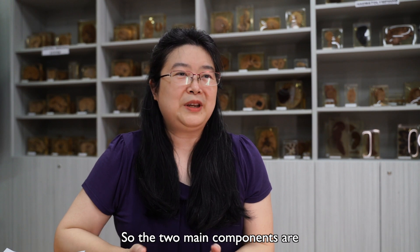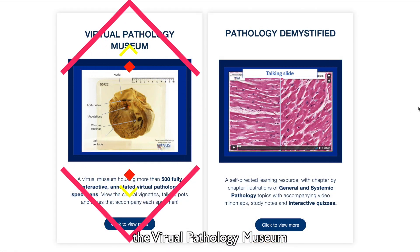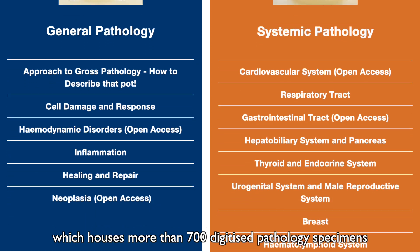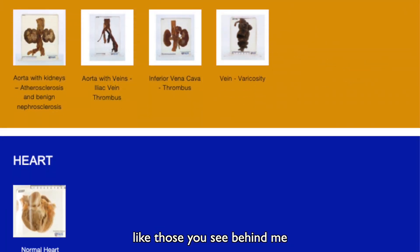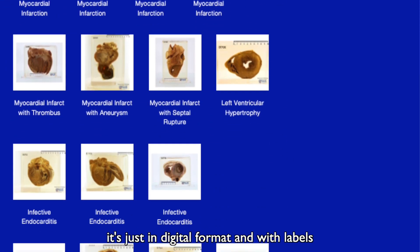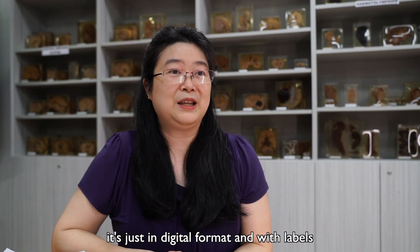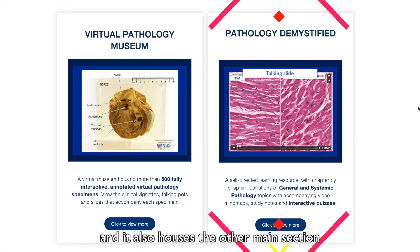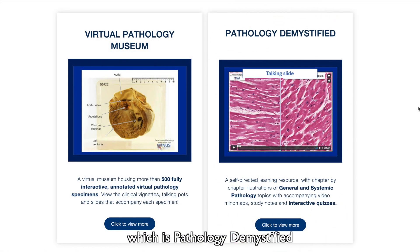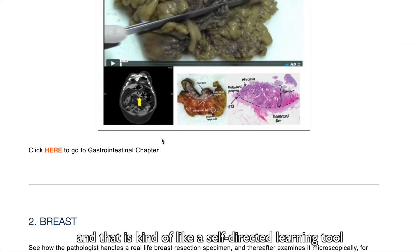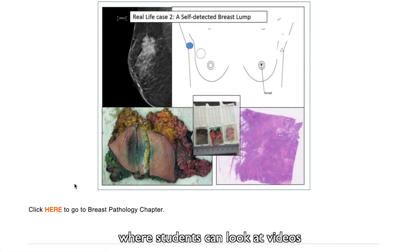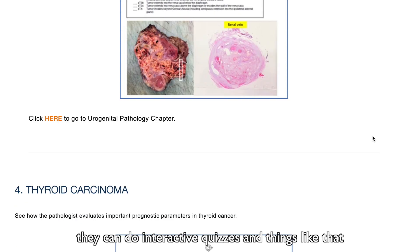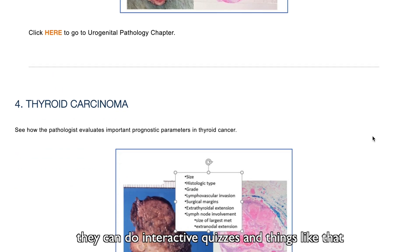The two main components are the Virtual Pathology Museum, which houses more than 700 digitized pathology specimens like those you see behind me — just in digital format and with labels. It also houses the other main section, which is Pathology Demystified, a self-directed learning tool where students can look at videos, do interactive quizzes, and things like that.